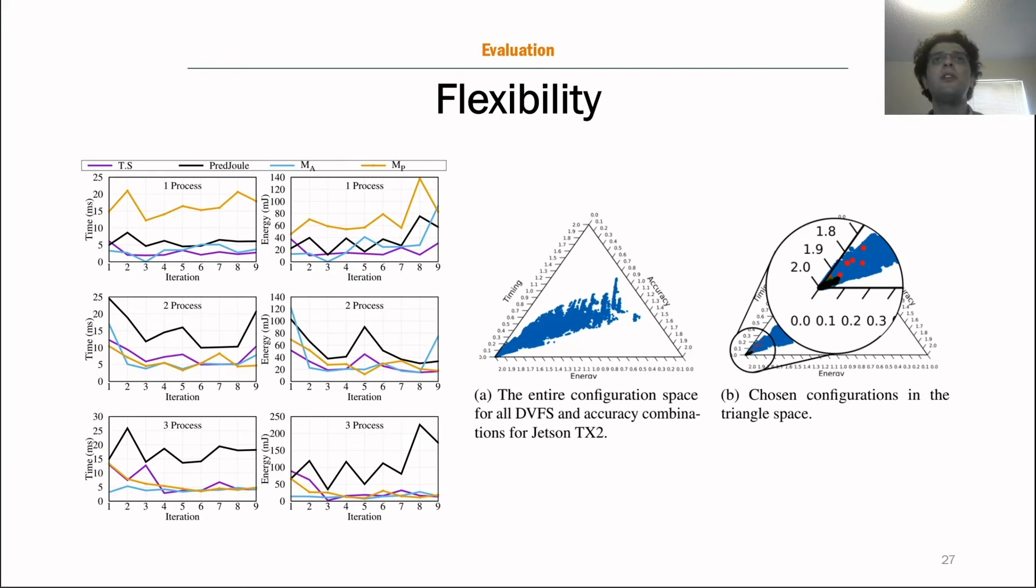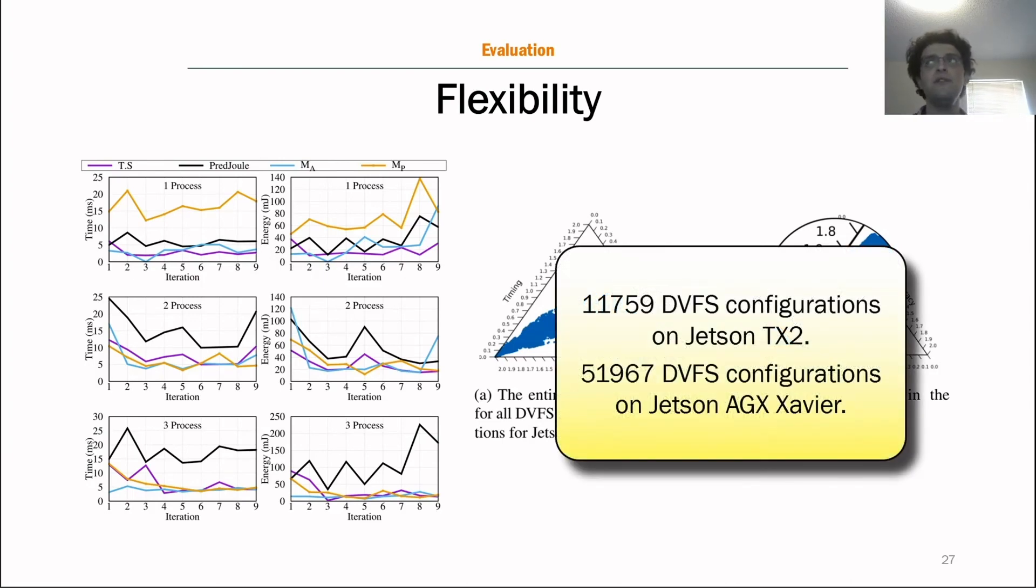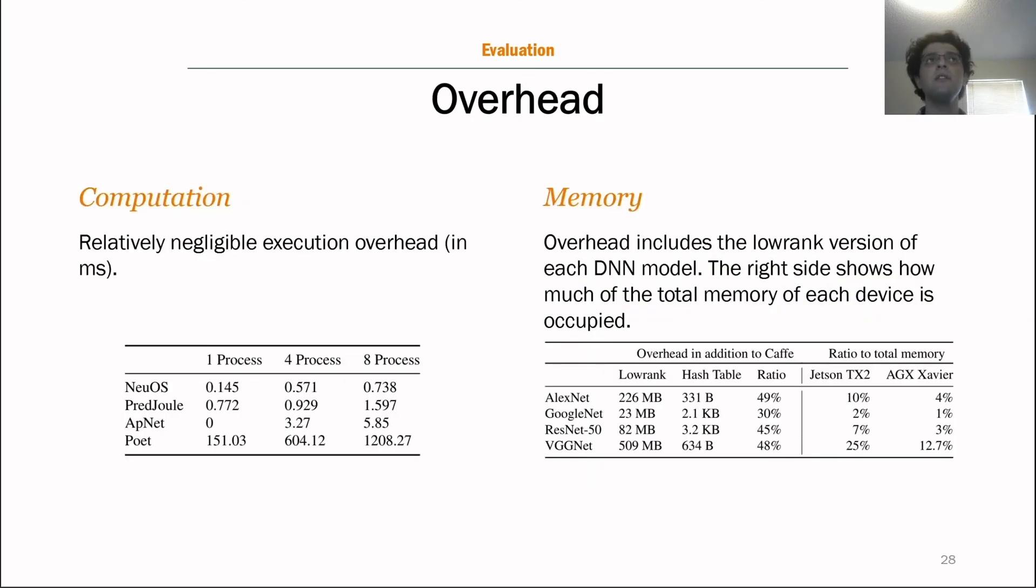And on the right, you can see the configuration space for the DVFS and accuracy adjustment on the Jetson TX2. This is in a ternary plot, and again, how we did this is please consult the paper. But you can see that the desirable configurations, even though we're trying to optimize this problem, the desirable configurations are down on the corner on the left. But still, they have huge implications which one you choose. And just to give you a point of view on how complex this problem is, you have almost 12,000 DVFS configurations on the Jetson TX2, and 52,000 DVFS configurations, unique DVFS configurations on the AGX Xavier.